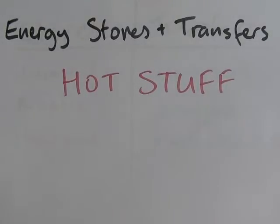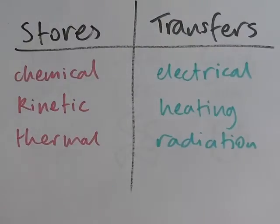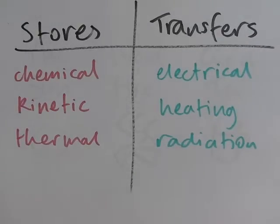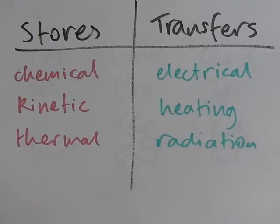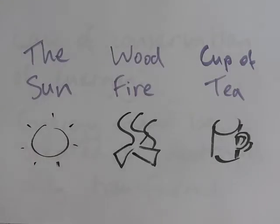Welcome to this video about energy stores and transfers in the context of hot stuff. Energy stores and transfers is a way of thinking about energy where we have certain ways of storing energy — chemical energy stores, kinetic energy stores, thermal, etc. — and ways of transferring that energy: electrical, heating, radiation, and so on. I'm going to try to be consistent in this video: stores are in red and transfers are in green. We're going to look at energy transfers in the context of three things: the sun, a wood fire, and a hot cup of tea.